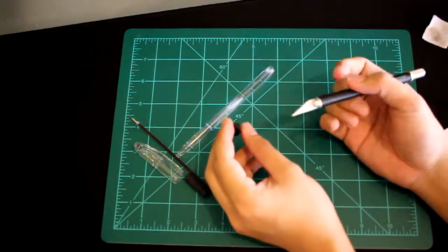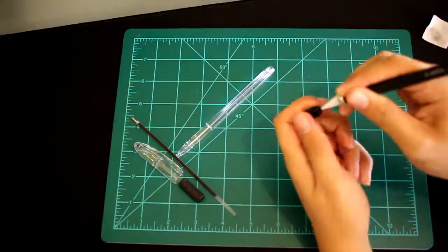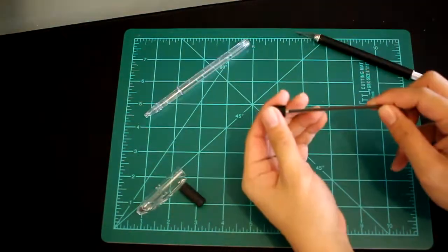Now take your X-Acto knife and your back plug and carve out a hole for the ink tube. Start from the center and spiral outwards. Put your ink tube through the hole.